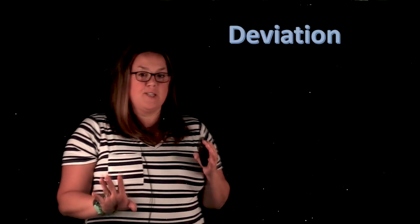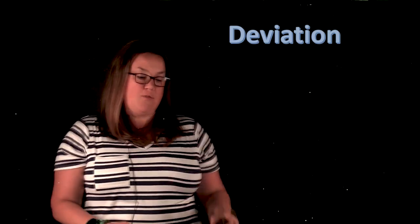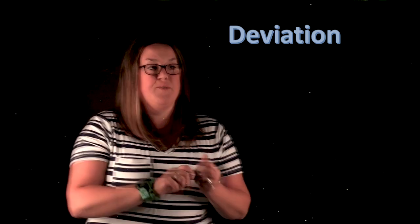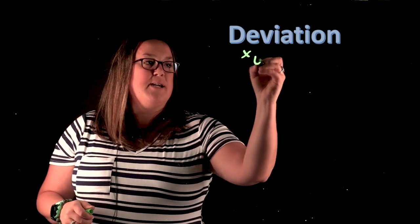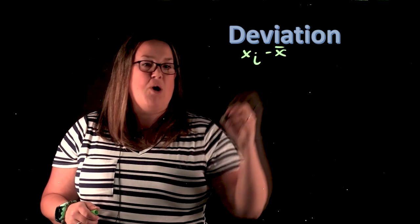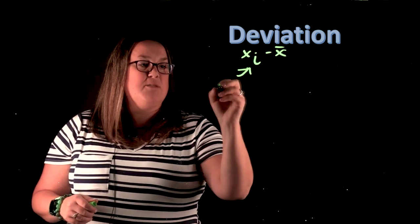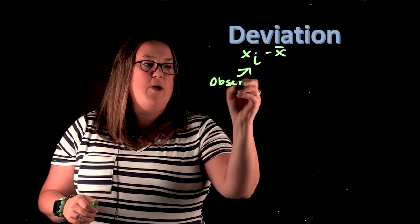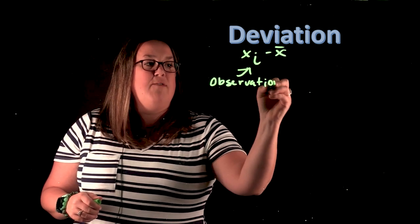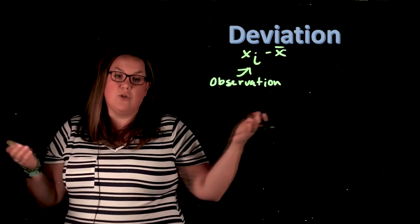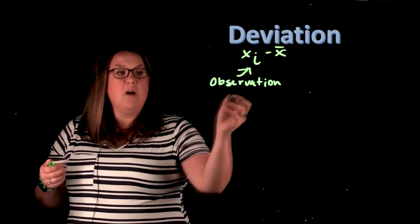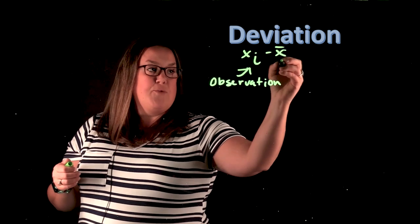So deviation measures the distance that observations fall from the mean. It has a nice generic formula: x sub i minus x bar. Now x sub i just means that you're going to run through every observation. So if it was counting where you were in the data set, x sub one would be the first location, two would be the second location, etc. This just means do it for every observation.